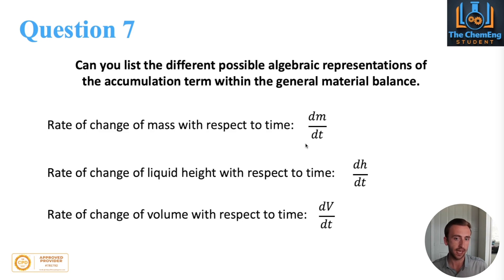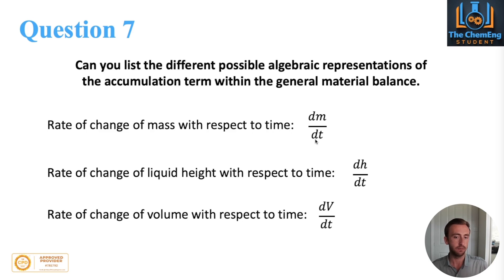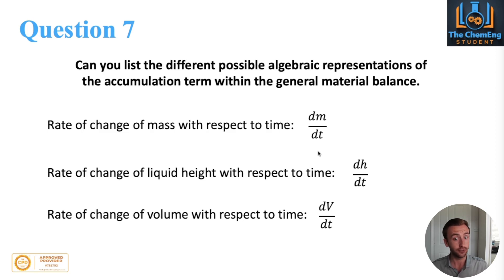This shows you understand that the accumulation term is always with respect to time. So if you have accumulation taking place, you may not have a steady state system — you will have a transient state system. You could filter that into your answer as well.